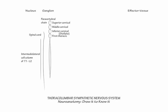The somatotopy of these ganglia is fairly broad. Fibers from the rostral intermediolateral cell column synapse in rostral ganglia, and fibers from the caudal intermediolateral cell column synapse in caudal ganglia.